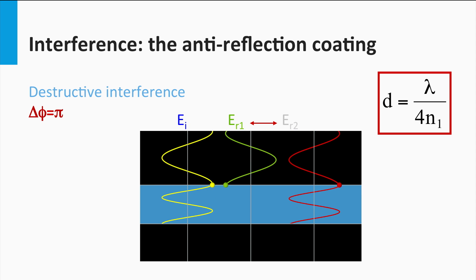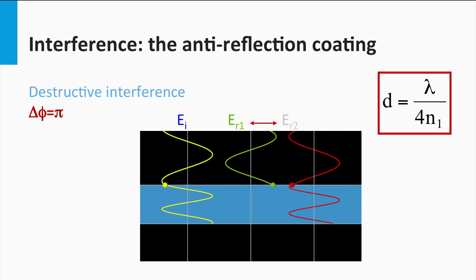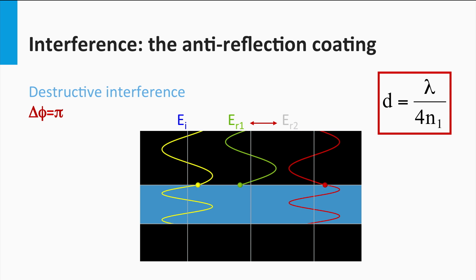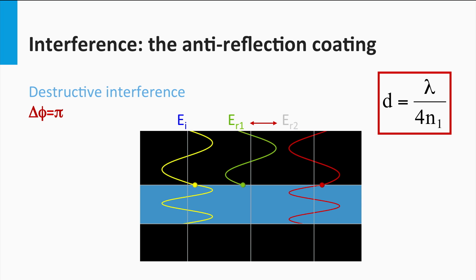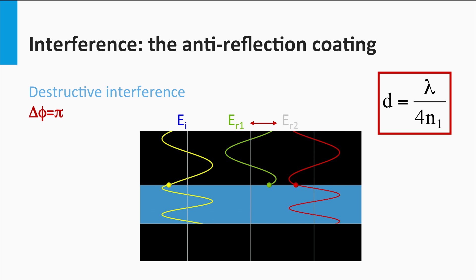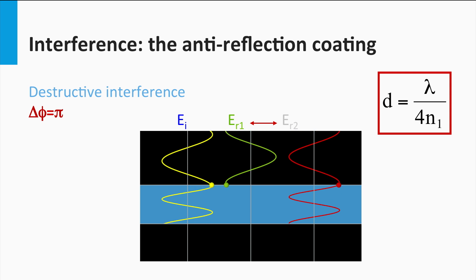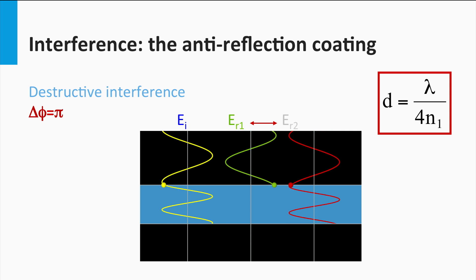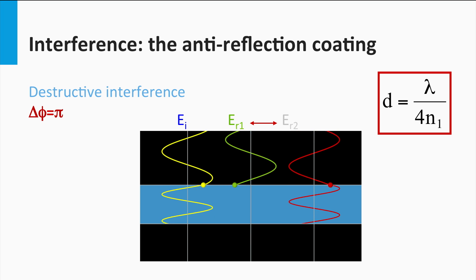One can design an anti-reflection coating based on this principle. We have placed an interlayer between two media. The green wave shows the reflection back from the first interface and the red wave shows the wave reflected back from the second interface. The two waves coupled out of the system appear to be in anti-phase. As a result, the total amplitude of the electric field of the outgoing wave is smaller. The maximum destructive interference occurs when the product of the refractive index and thickness of the interlayer is equal to the wavelength divided by four — in other words, the thickness is the wavelength divided by four times the refractive index of the coating.